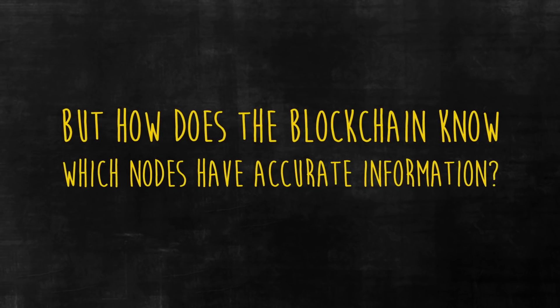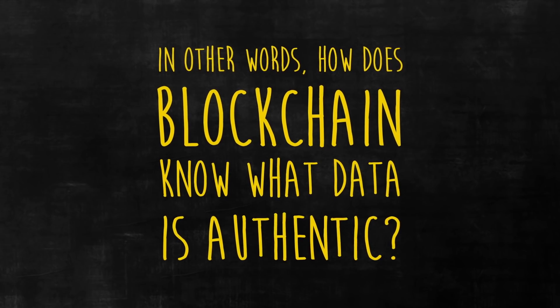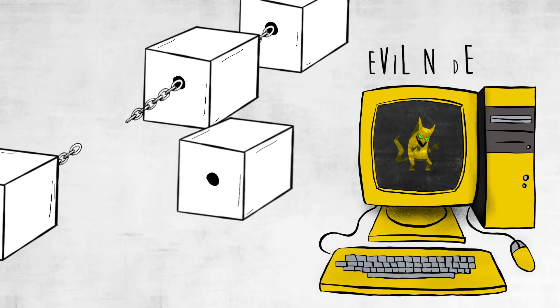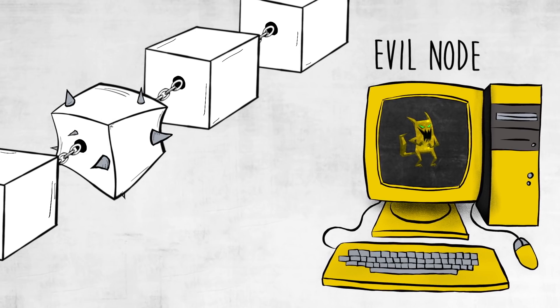But how does the blockchain know which nodes have accurate information? In other words, how does blockchain know what data is authentic if any node can modify the chain? What's to stop a malicious node from trying to fool the rest of the network for its own advantage?